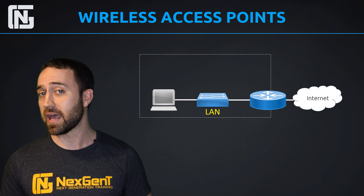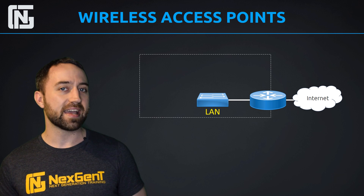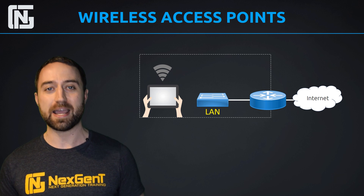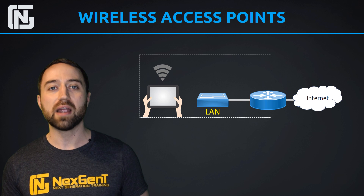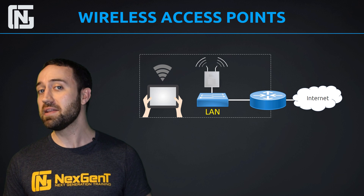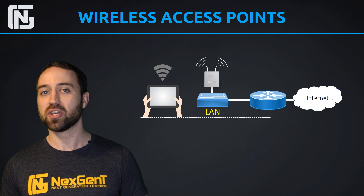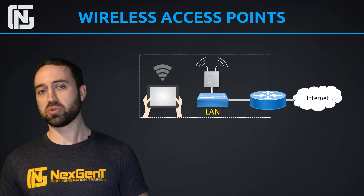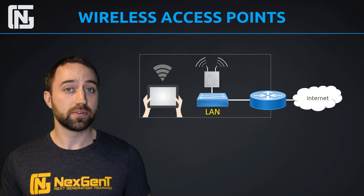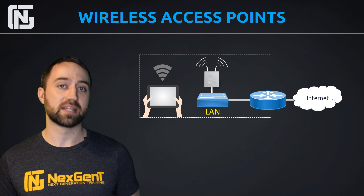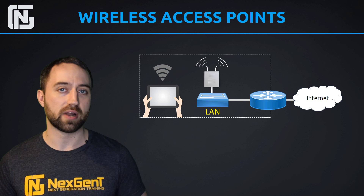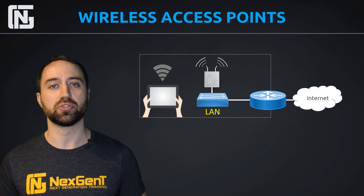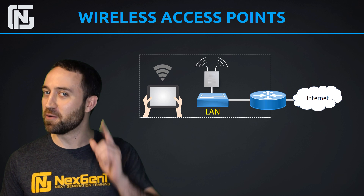Now what if we had a host that needed to access the network wirelessly? Well then we need a specific type of device called an access point, or wireless AP, to provide that wireless network access to the LAN. Most common SOHO routers — small office, home office routers — will come with built-in wireless connectivity. So the router at your house is usually a combo device with a router, a switch, and a wireless AP built in.